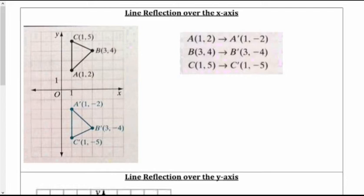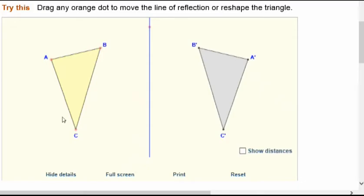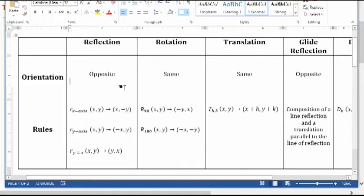Let's take a look first at the chart that you have. We're going to start with the orientation. Now our reflection has an opposite orientation. So what does that mean exactly? If you take a look at this reflection over the line, the triangle on the left, the original figure, the letters go A, B, C clockwise. But when it was reflected over the line, if you look at A prime, B prime, C prime, it's going counterclockwise. That ordering of the letters is the orientation. Because it went from clockwise to counterclockwise, that makes it an opposite orientation.